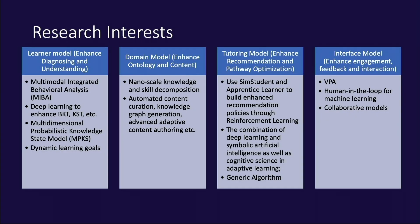Looking at the research interests we have, these are four big categories to enable all of that. The four categories are: the learner model, domain model, tutoring model, and interface model. Under each model, you have different algorithms that enable different types of functions that AI is performing. The learner model is really about diagnosing — figuring out the student's state. We have an algorithm called Model Integrated Behavior Analysis, work done with UC Berkeley, University of Sorrento, and SRI using more modalities.